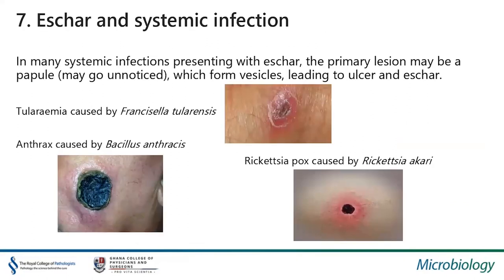In many systemic infections that present with eschar — which is usually a scar or area of necrosis on the skin — the primary lesion is usually a papule, which may go unnoticed, and then progresses to form vesicles, ulcer, and then eschar. You can see this in conditions like tularemia, caused by Francisella tularensis; anthrax, caused by Bacillus anthracis, which produces anthrax toxin complex causing destruction of the skin resulting in an eschar; Rickettsialpox, caused by Rickettsia akari, which is known to be associated with an eschar; and as mentioned earlier, Pseudomonas aeruginosa ecthyma gangrenosum, which also ends up in eschar form.